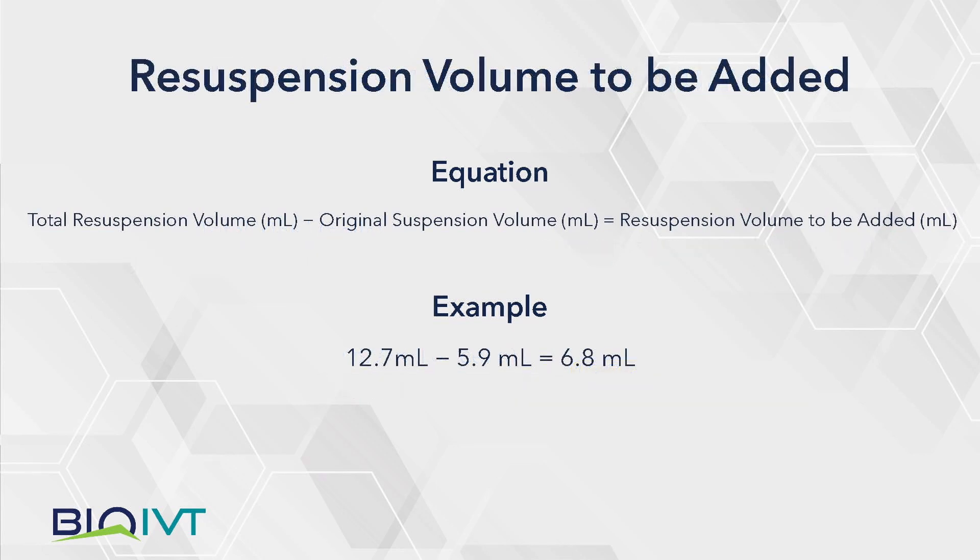Now, calculate the amount of medium to add by subtracting the total resuspension volume required from the initial suspension volume. In this example, subtract 5.9 milliliters from the 12.7 milliliters for a total of 6.8 milliliters.